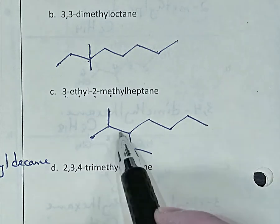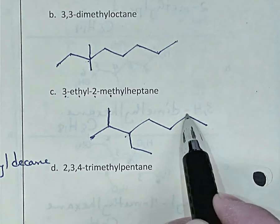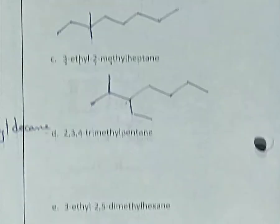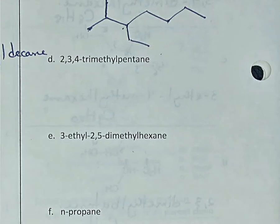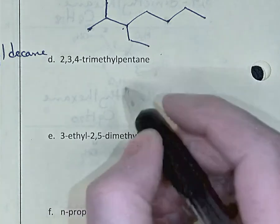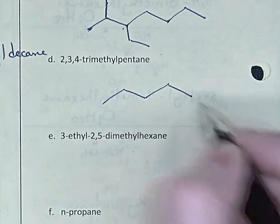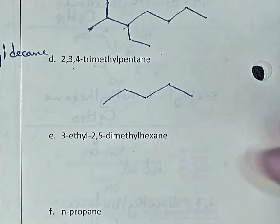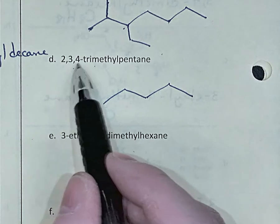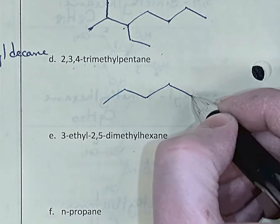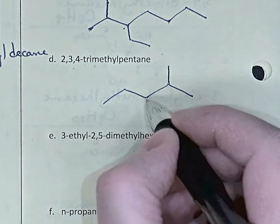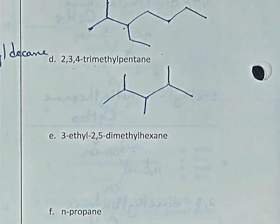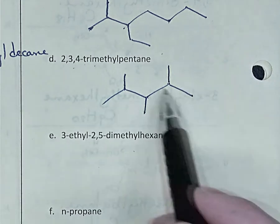You could have counted from the other side and called this carbon-1, carbon-2, carbon-3, putting your ethyl branch there and your methyl branch over there — that would also be fine. Next: 2,3,4-trimethylpentane. Pentane is a five-carbon chain: 1, 2, 3, 4, 5. Trimethyl tells me there are three single-carbon branches, and they're on carbons 2, 3, and 4. So: carbon-1, carbon-2 has a methyl branch, carbon-3 has a methyl branch, carbon-4 has a methyl branch. I realize I could have counted from the other side and gotten the exact same molecule.